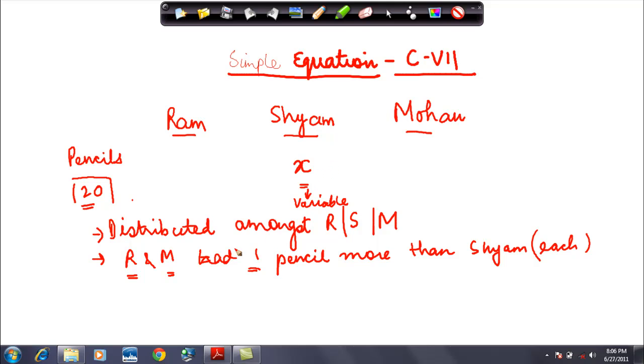What is the hint I have? Both Ram and Mohan had one pencil more, which means whatever is the number of pencils available with Sham, Ram had that many pencils plus one. Why? Because he had one pencil more. Similarly, even Ram had one pencil more than Sham, so X plus one.